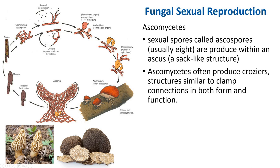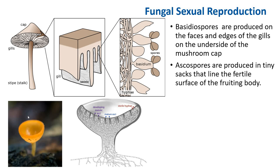In ascomycetes, a few of which produce edible ascocarps like the morel, sexual spores are called ascospores. Usually eight ascospores are produced in an ascus or sac-like structure. In ascomycetes like cup fungi, tooth fungi, truffle, and morel, the spores are called ascospores. Here is an ascocarp — the fruiting body of ascomycetes — and in this ascus you can see individual asci each containing eight ascospores. This is a morel and this is a truffle. The basidia produce basidiospores on gill-like structures, while in ascomycetes you have the ascocarp, asci, and ascospores.